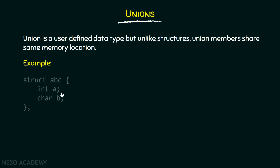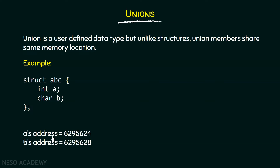For example, we have a struct abc which consists of two members: integer a and character b. Using struct abc, I checked the addresses of integer a and character b. What I got is: a's address is 6295624 and b's address is 6295628. They are different addresses, which means that structure members get different memory locations.